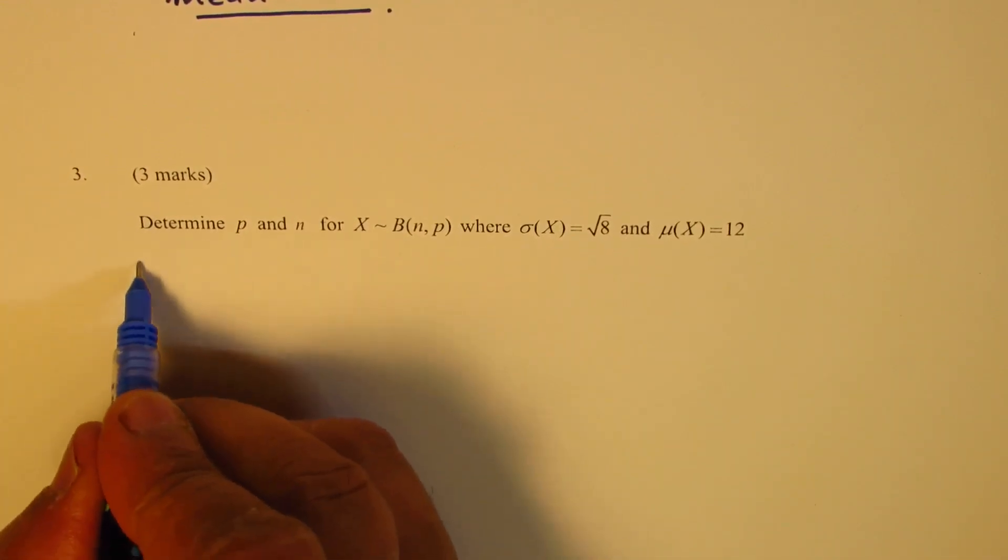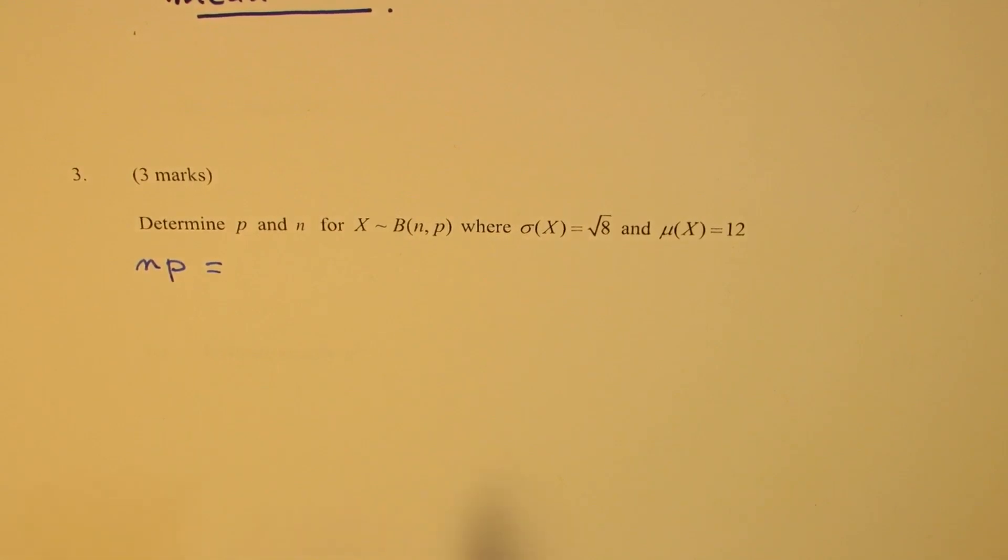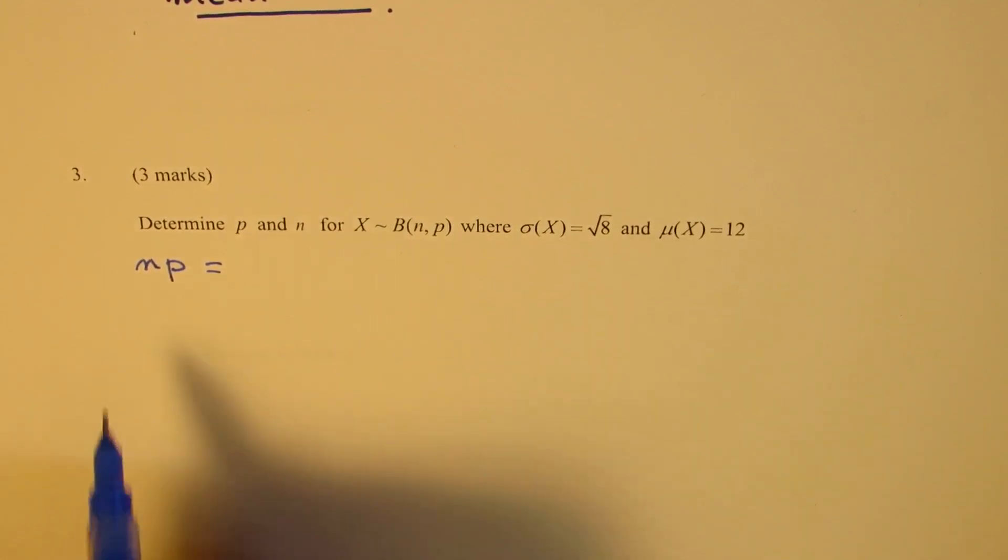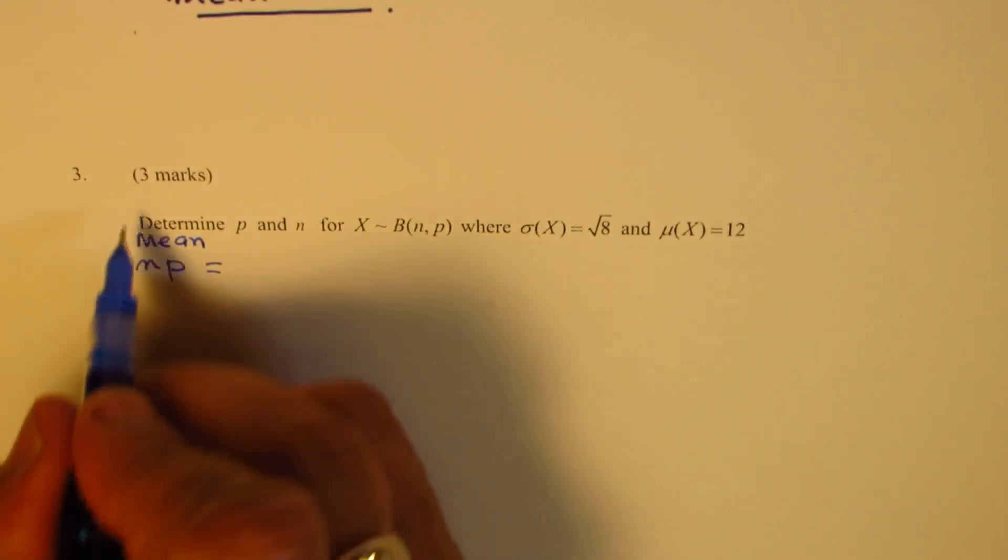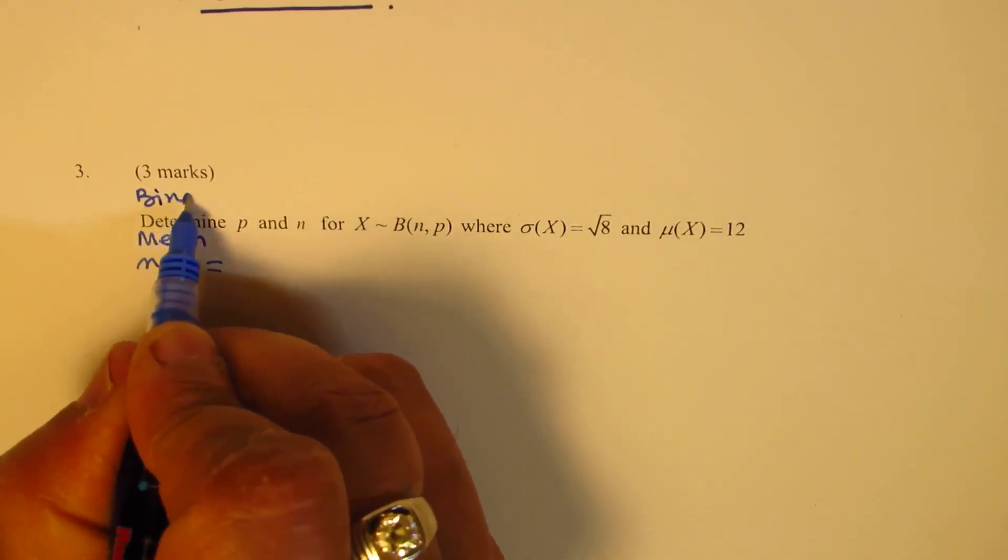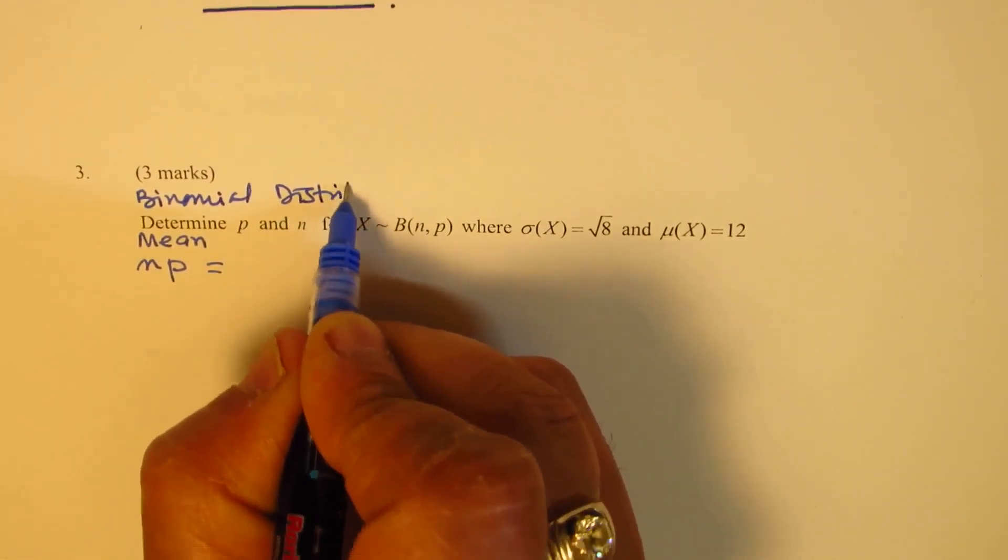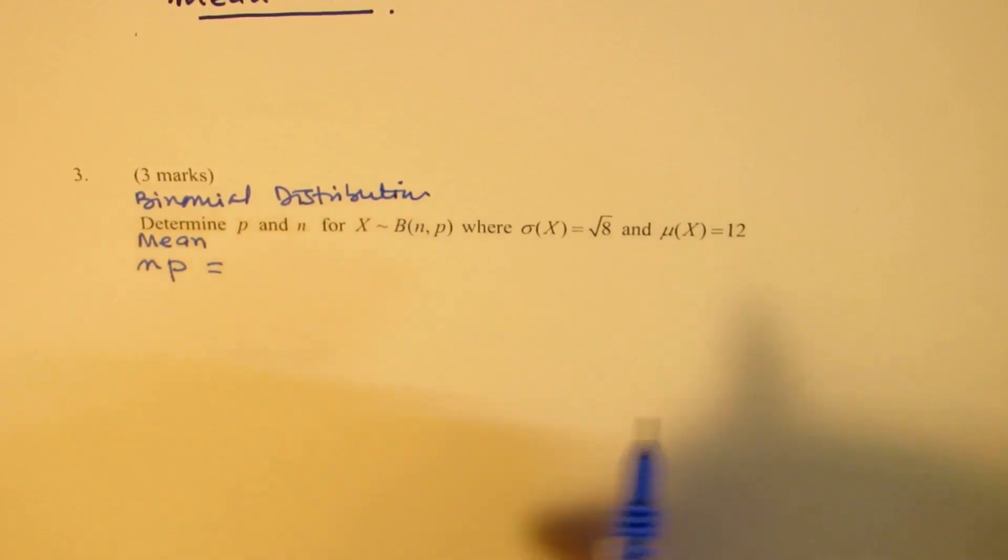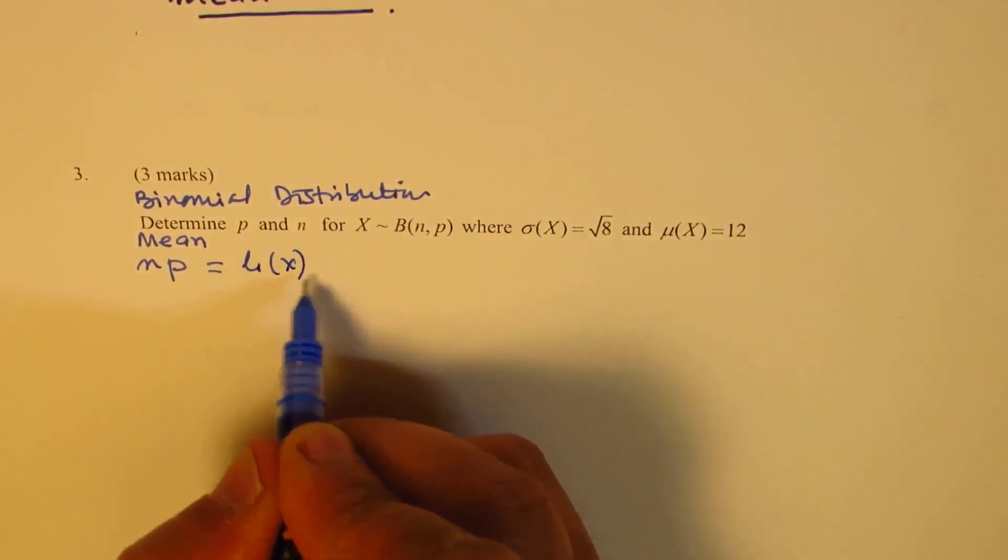So what we know is that NP is basically equal to 12, which is the mean for a binomial distribution. We are given NP equals 12, and that becomes one equation for us.